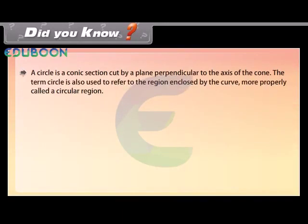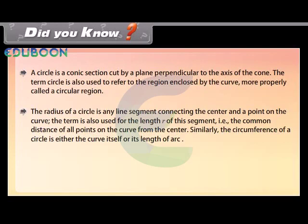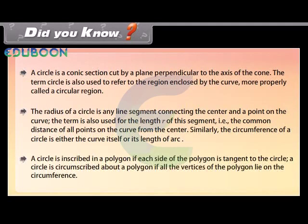Did you know? A circle is a conic section cut by a plane perpendicular to the axis of the cone. The term circle also refers to the region enclosed by the curve, more properly called a circular region. The radius is any line segment connecting the center and a point on the curve, as well as the common distance r of all points from the center. The circumference is either the curve itself or its arc length. A circle is inscribed in a polygon if each side is tangent to the circle, and circumscribed about a polygon if all vertices lie on the circumference.